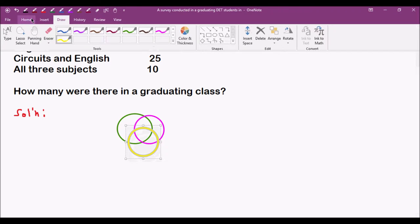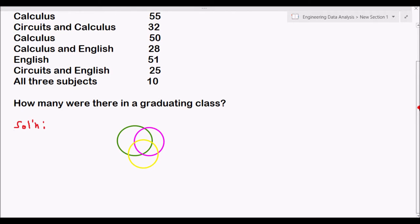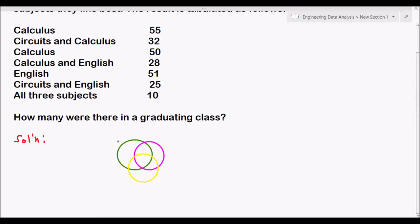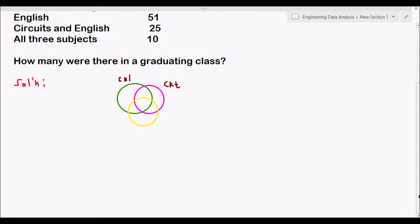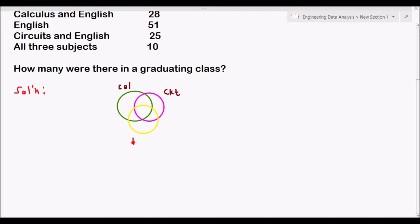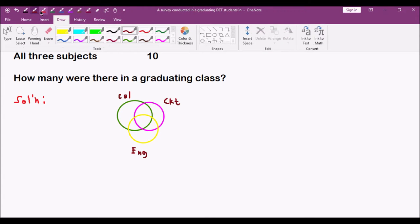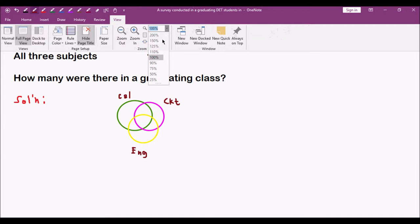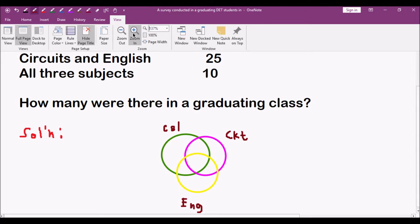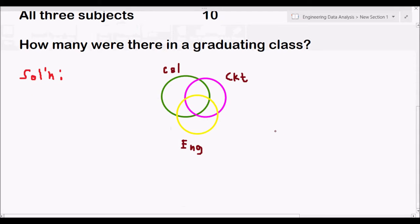We will write the options or the events. This green, let's just say that this is for your favorite subject Calculus. This purple will be your major subject Circuits. The shortcut for circuits is CKT. Then the yellow will be your subject that you got a high grade which is 1.0 English. When you now have the Venn diagram, let's try to zoom this one. Let's make it bigger. You have now the Venn diagram.